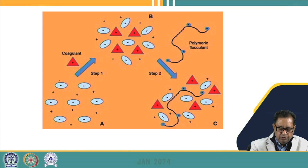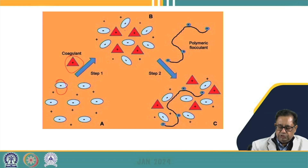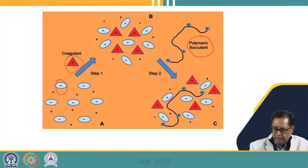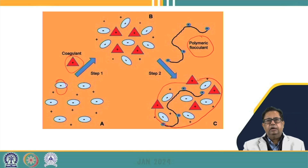A coagulant is added — knowing that colloidal particles have a negative charge — and the coagulant, which is positively charged, neutralizes the charges on the particle surface. As these particles come closer, they form flocs. A polymeric flocculant can also be added; these polymers bind particles together, helping form bigger flocs that ultimately settle down.